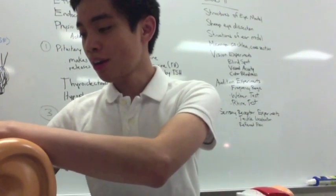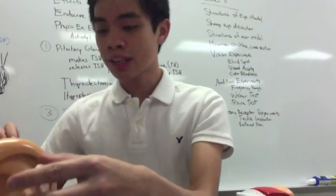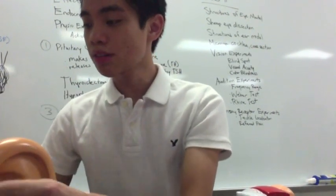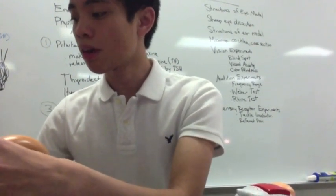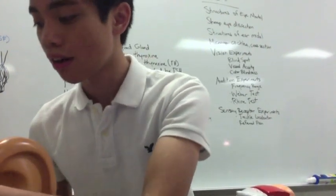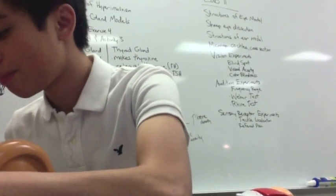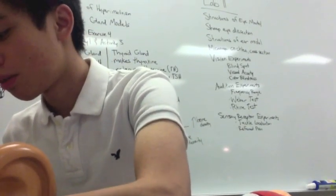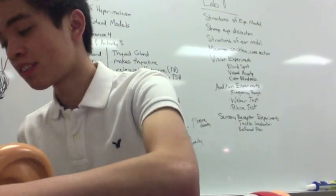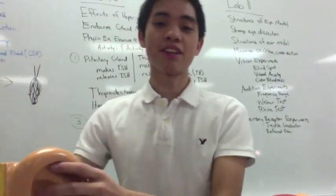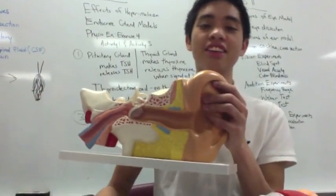We're going to go over different models. We're going to go over the model of the eye and of the ear. We're going to start with the ear first because it's much easier, and we're going to start easy.